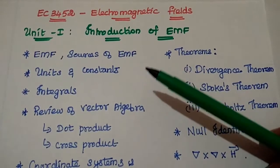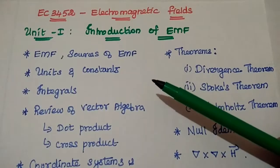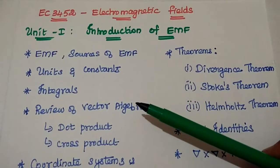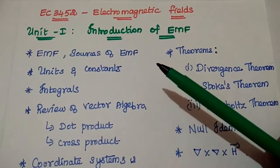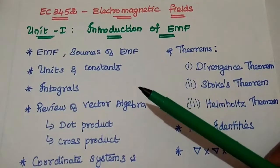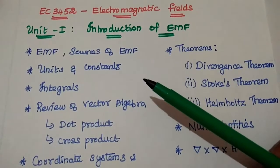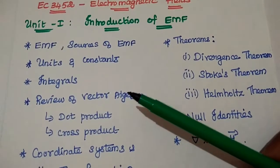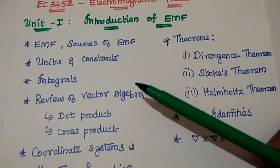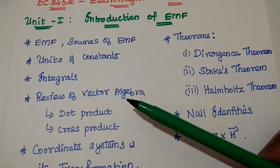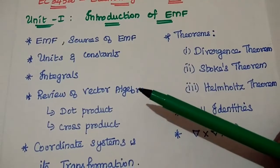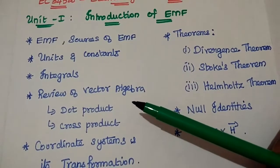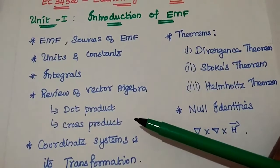The first half is all about the basics of electromagnetic fields — what is meant by electromagnetic field, the sources of electromagnetic field, units and constants used in EMF. Then the integrals: line integral, surface integral, and volume integral. Review of vector algebra, covering vector addition, dot product, and cross product.